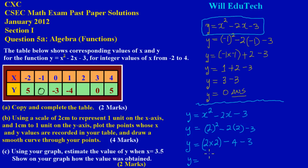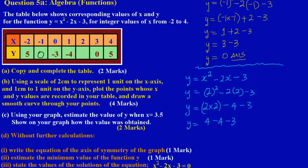So y = 2 × 2 - 2(2) - 3, which is 4 - 4 - 3. The positive 4 and negative 4 cancel out, leaving y = -3. So when x = +2, y = -3. Let's fill that in. We've now completed the table by finding all the corresponding y values.